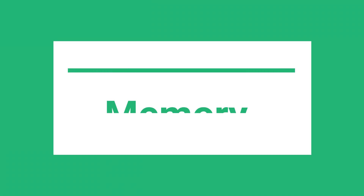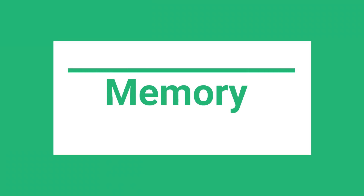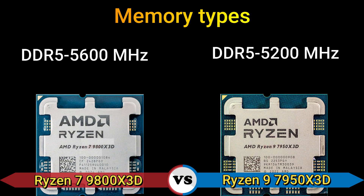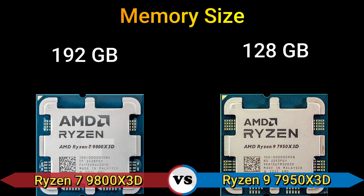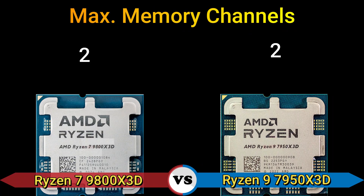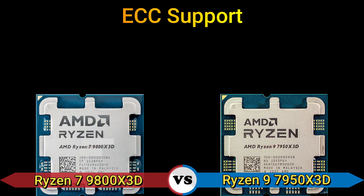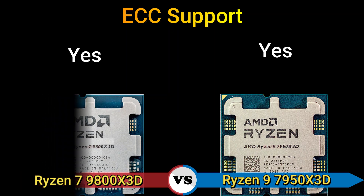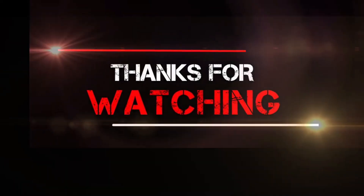Part 4 — Memory. Memory type: DDR5-5600 MHz and DDR5-5200 MHz. Memory size: 192 GB and 128 GB. PCI Express: Zen 5, 24 lanes CPU only. Max memory channels: 2. ECC support: yes. Thanks for watching.